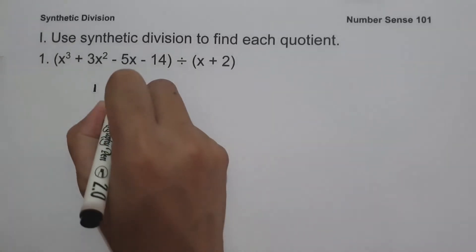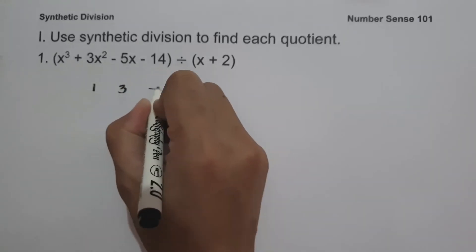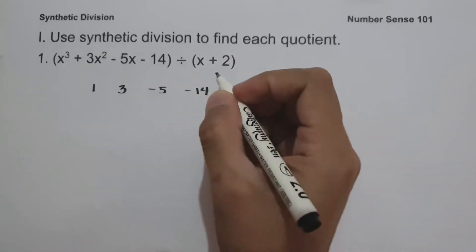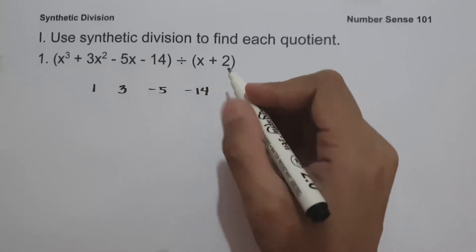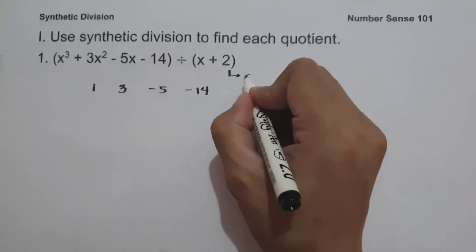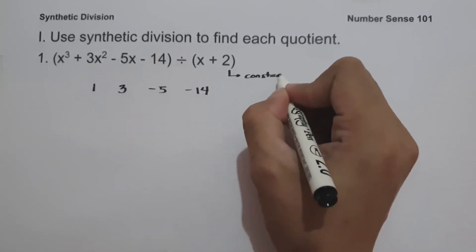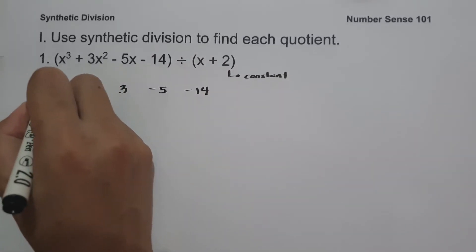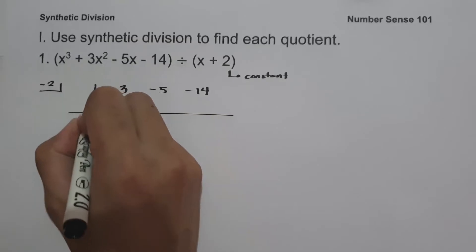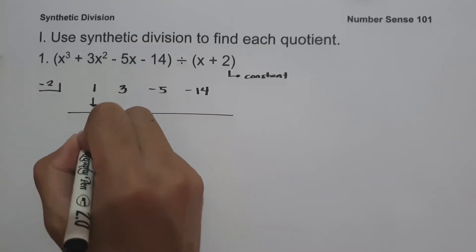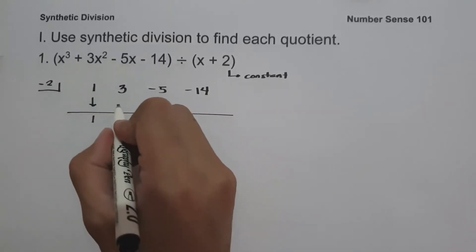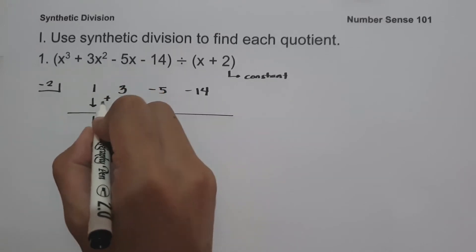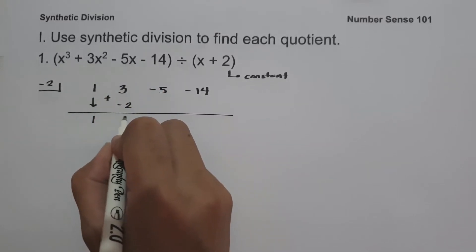The coefficients are 1, 3, negative 5, and negative 14. Since our divisor is x plus 2 and our constant is positive 2, we write the opposite sign of the constant, that is negative 2. Then we bring down 1. One multiplied by negative 2 is negative 2, and 3 plus negative 2 is positive 1.